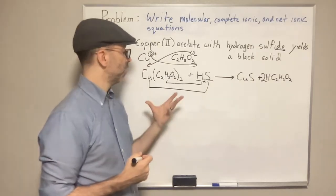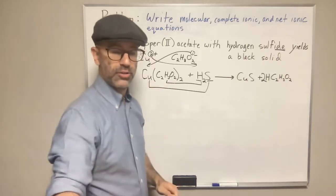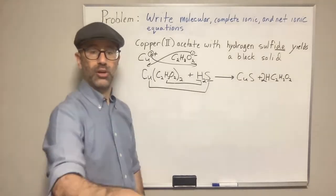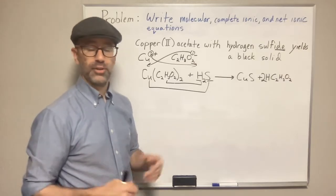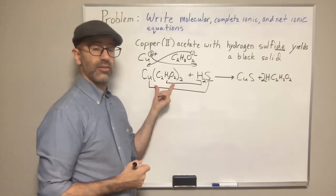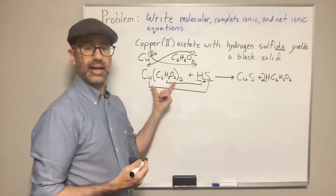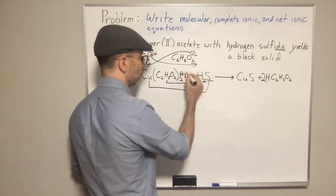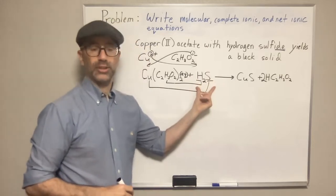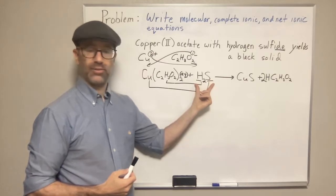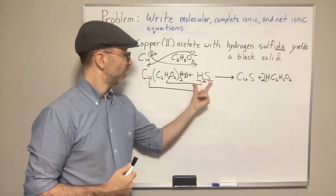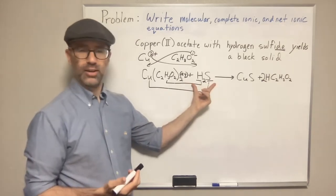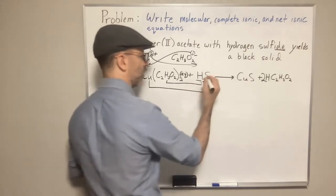Now let's write the states of matter. To know whether you have a solid or aqueous for an ionic substance, you use your solubility rules or a solubility table. On the solubility rules, anything that is an acetate is going to be soluble with no exceptions — so copper 2 acetate is aqueous. Hydrogen sulfide is actually a gas — it's a light molecule, similar to how carbon dioxide is a gas.